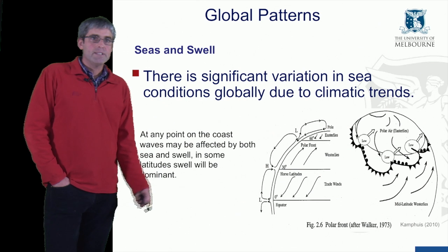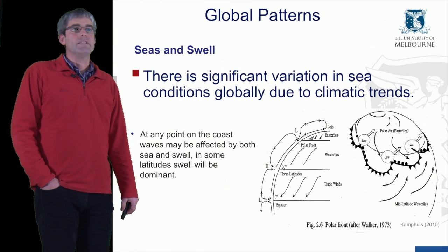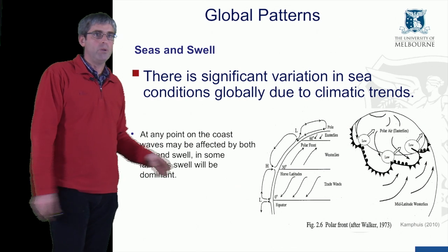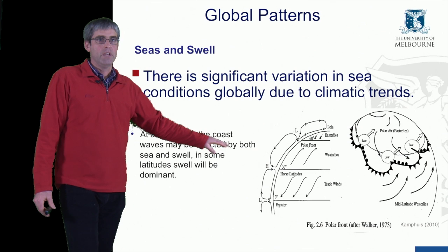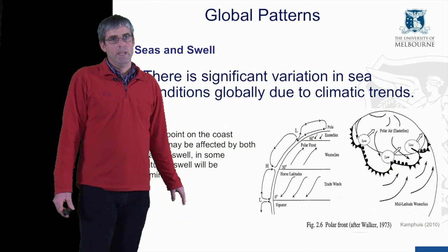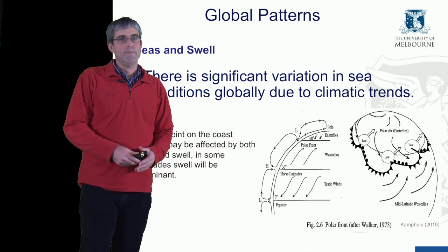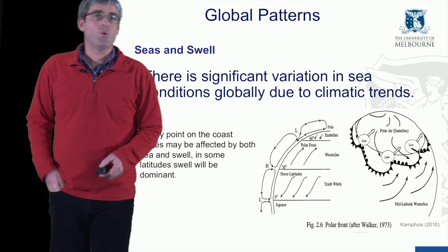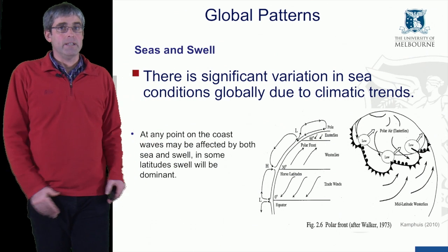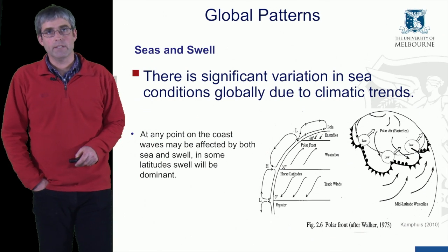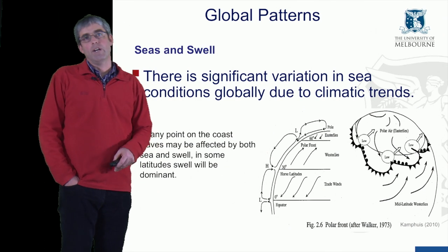There is a global pattern to the development of waves. They develop where the winds are strongest, which is typically at the polar front — around 40 degrees latitude in both the northern and southern hemispheres. This is also where hurricanes and cyclones occur, producing areas of high wave development and strong waves.